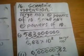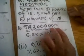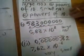They use this for large numbers and for small numbers. Okay, this is a large number. Okay, so that's like 583 million, right?